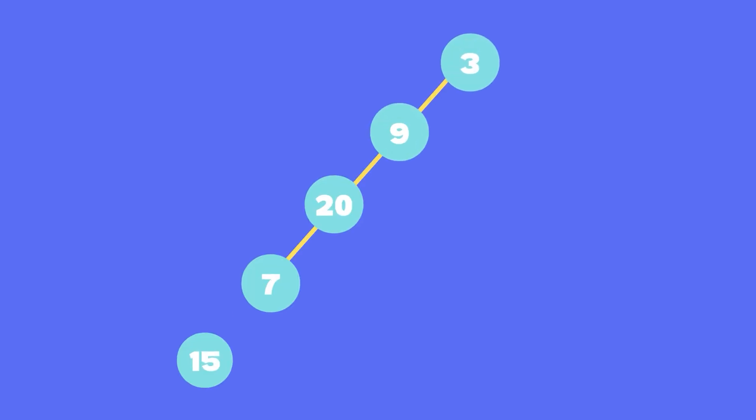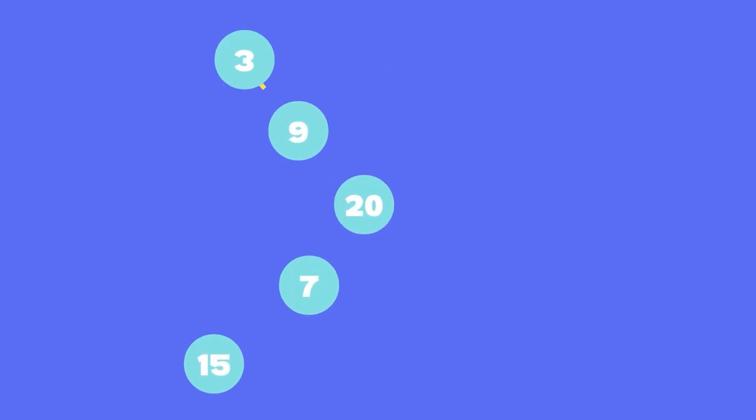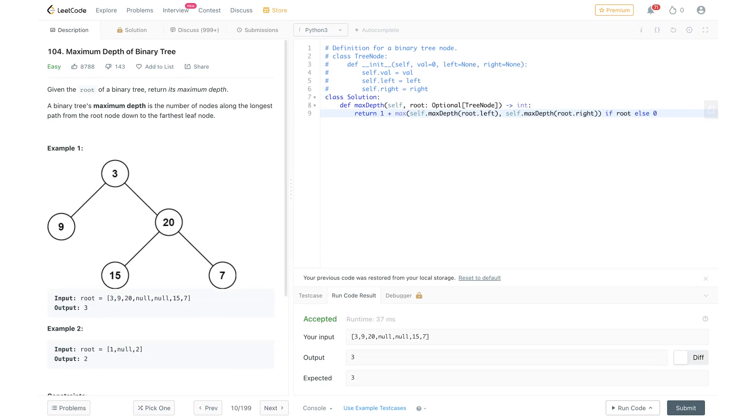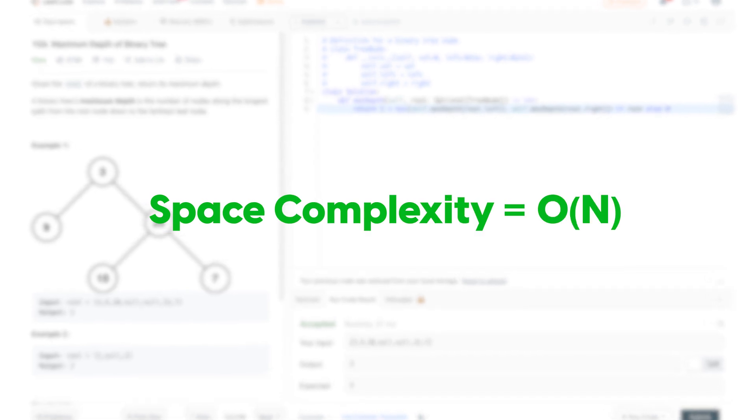When talking about the space complexity, we have to account for the space used by this call stack. So if the total number of nodes in the tree is n, what is the maximum size of call stack that you need in the worst case? Well, if all the nodes are arranged to the left like this or to the right like this, when you reach the leaf node, all the other nodes will also be present on the call stack. That's why the space complexity of this solution is also order n.